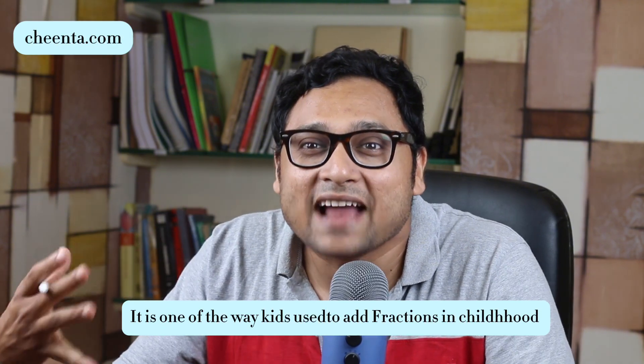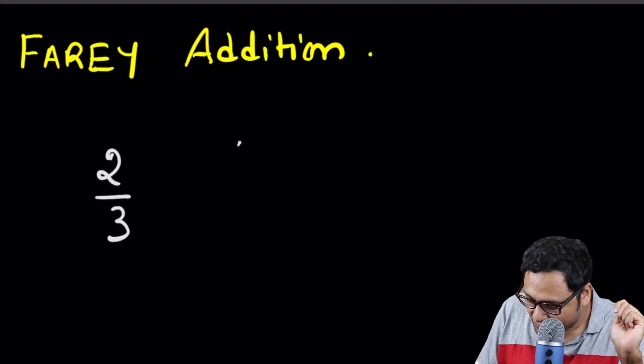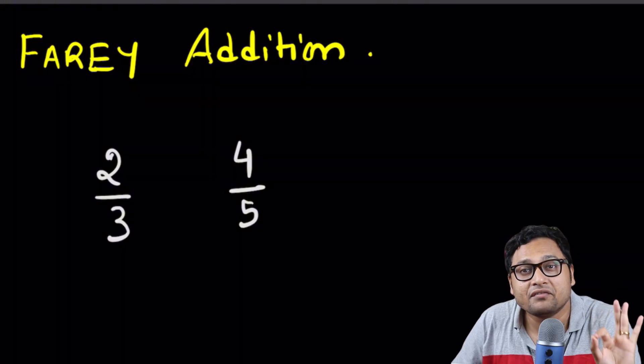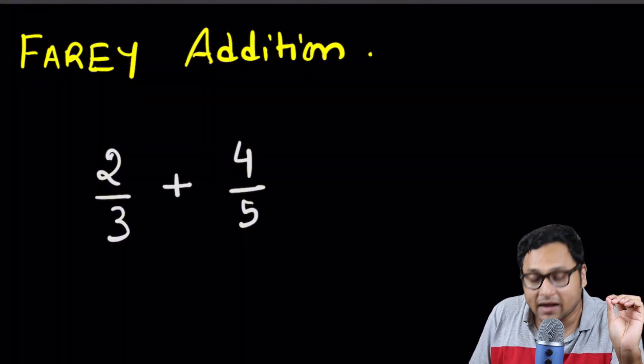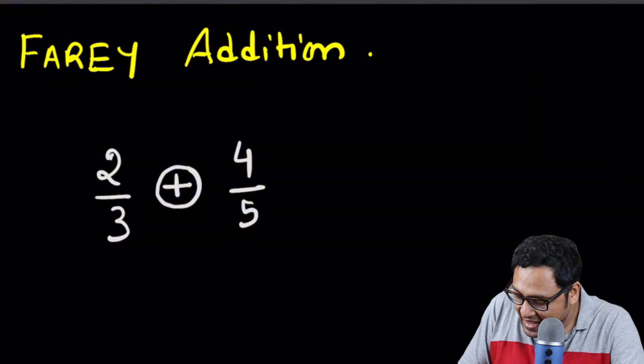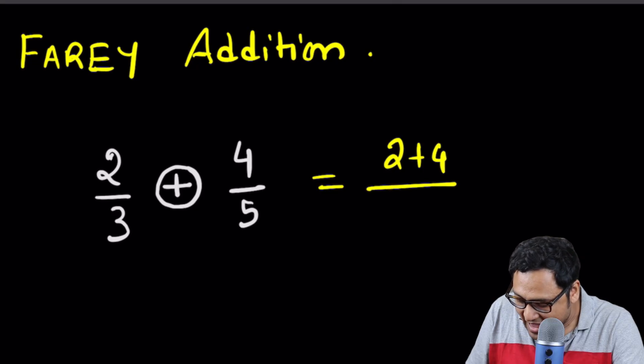Well, I'll give you an example and you might just smile because this is one of the ways we used to add fractions when we were really little kids. Of course, that method is wrong, but now we have a way to see the effectiveness of that method. Suppose we have two fractions, 2 by 3 and 4 by 5. We define something called the Farey Addition, which I will denote by plus with a round sign, a special kind of addition of fractions. We just add the numerators, 2 plus 4, and we add the denominators, 3 plus 5.